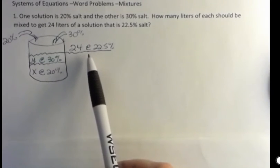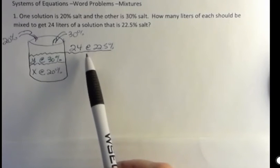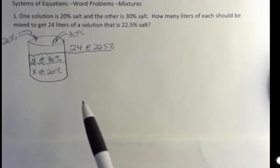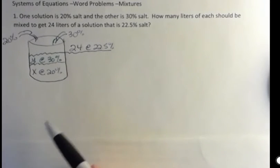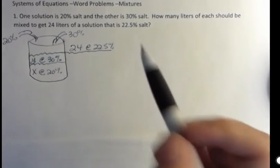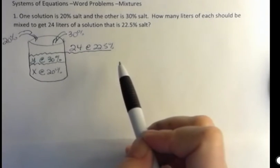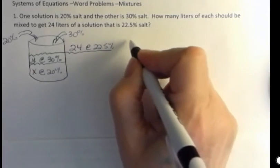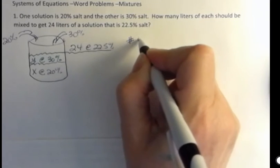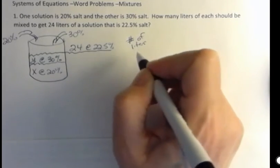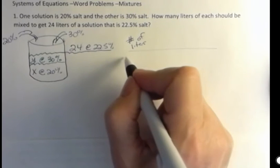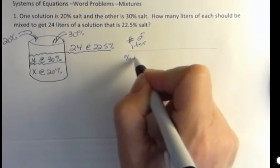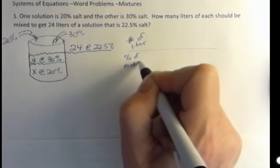Now what you might have seen if you work through some other textbooks or examples is they set up a table and they have you fill out the table. And if that works for you, then do that. I prefer to think about it in the bucket because I can visualize it better. But remember this, the first equation always has to do with the number of liters. And the second equation has to do the percentage.